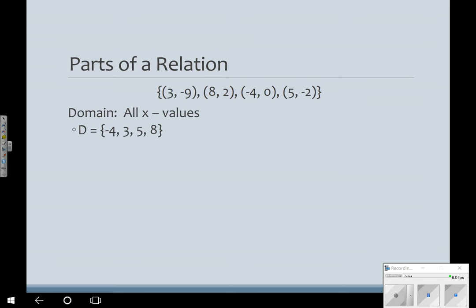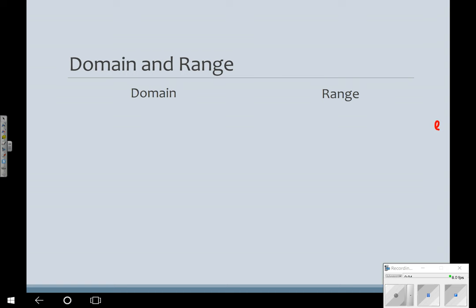The range is all of my y values of our set. So the range is -9, -2, 0, 2. In case you forgot from last year, remember that an ordered pair, the x comes first, and then the y. Can't remember that? It's alphabetical. Little tricks to learning it.